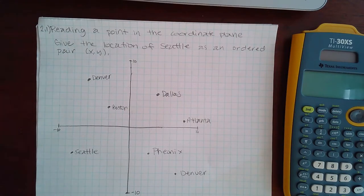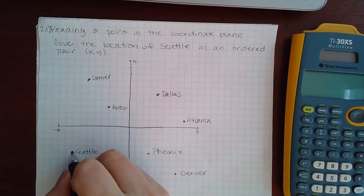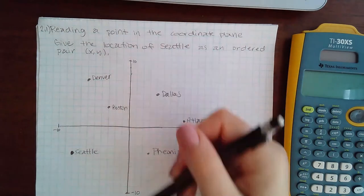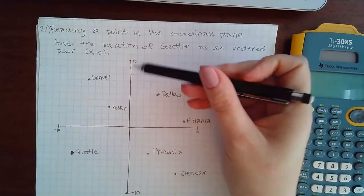Here we have reading a point in the coordinate plane. Give the location of Seattle as an ordered pair. So Seattle is located here, and we need to pay attention to the units. So it says here to here is...